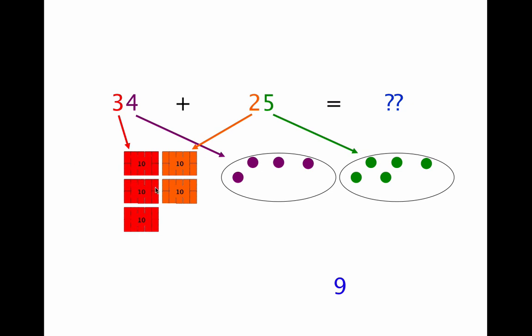And now we count up our number of tens. 1, 2, 3, 4, 5. We have 5 tens, so we write a 5. And that gives us our sum, 59.